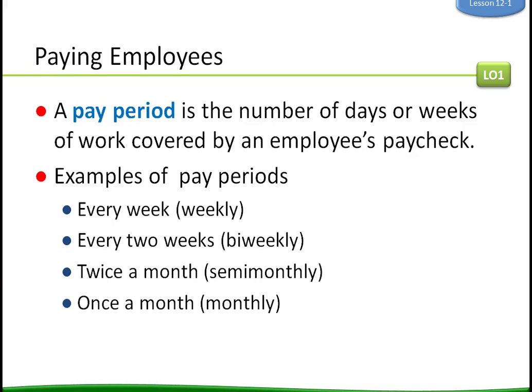A pay period is the number of days or weeks of work covered by an employee's paycheck. Examples of pay periods: you can get paid every week, every two weeks (bi-weekly), twice a month (semi-monthly), or once a month (monthly). If you get paid semi-monthly, you'll typically get paid on the 15th and then the last day of the month — the 28th, 29th in a leap year, 30th, or 31st.